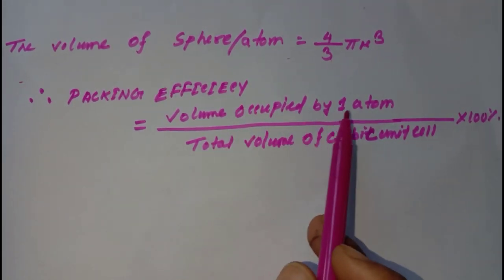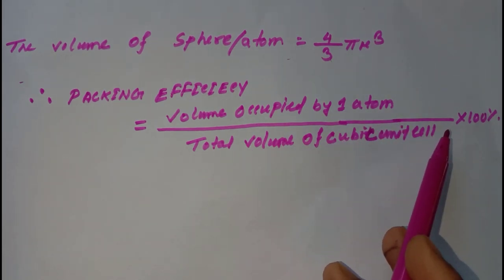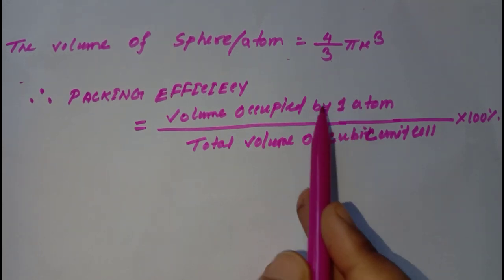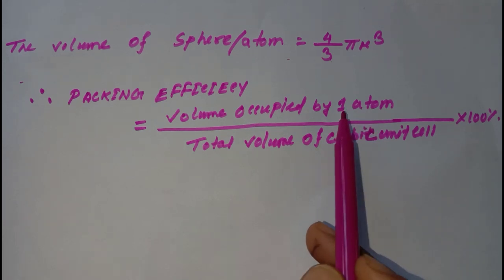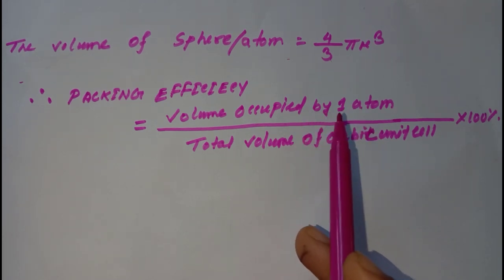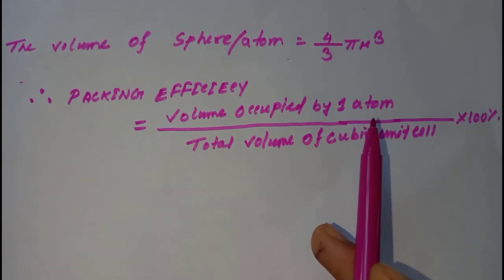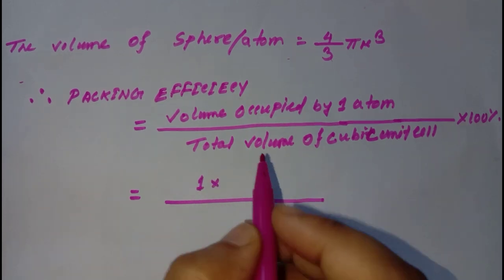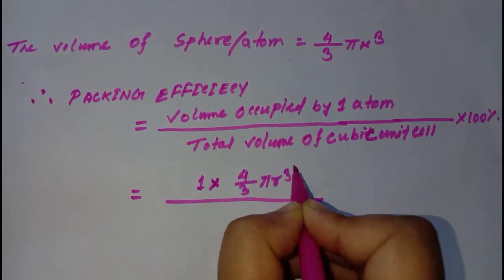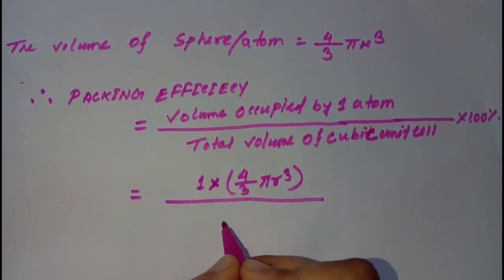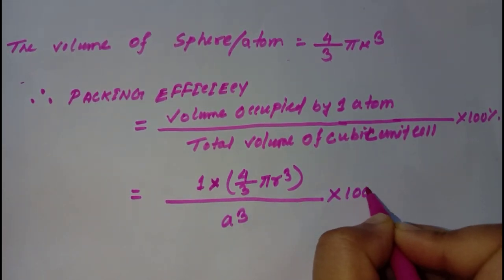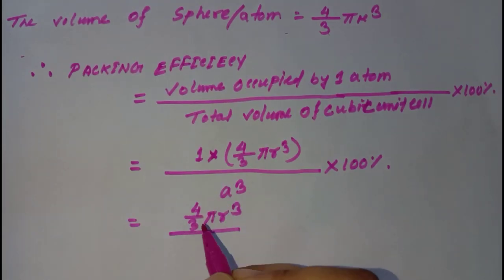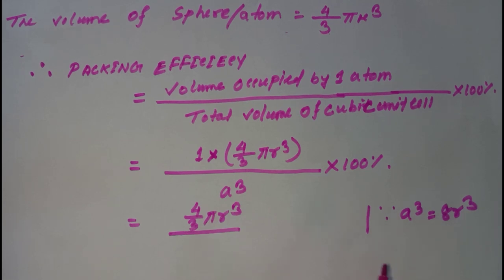Therefore, packing efficiency equals the volume occupied by one atom divided by the total volume of the cubic unit cell, multiplied by 100 percent. In a simple cubic unit cell, the total number of atoms present is one. So packing efficiency equals 1 × (4/3)πr³ divided by the total volume of the cubic unit cell, which is a³ = 8r³, multiplied by 100 percent.